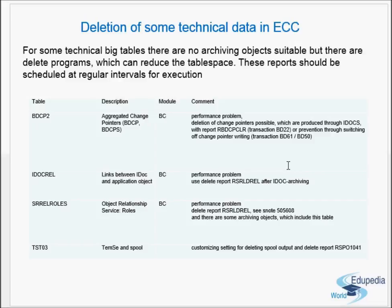The next table is SRREL — object relationship service roles. The same report RSRLDREL is used for this table as well. Refer to SAP note 505608, which lists archiving objects that include this table. You can enter this note number in the SAP service marketplace to get information on suitable archiving objects for this particular table.